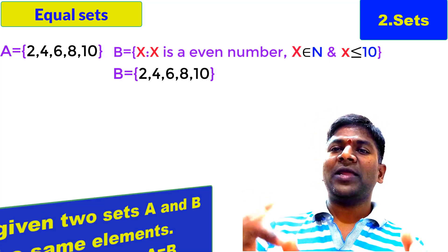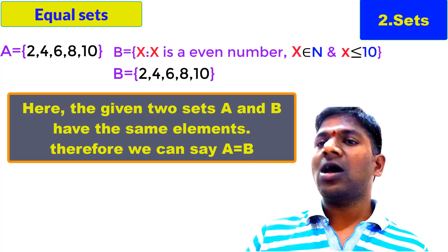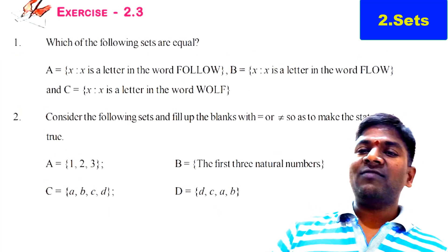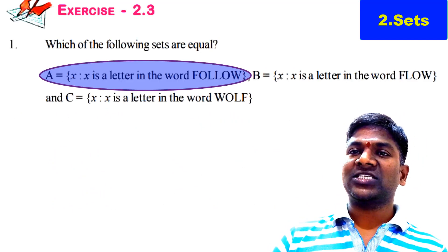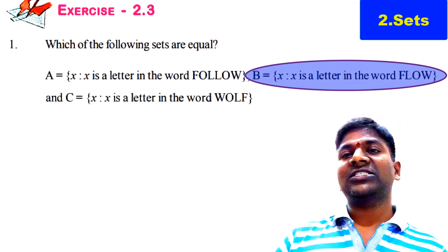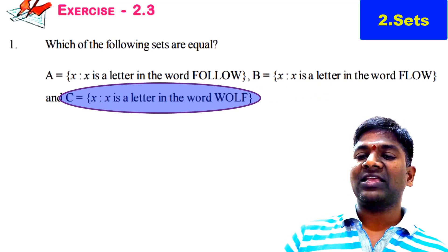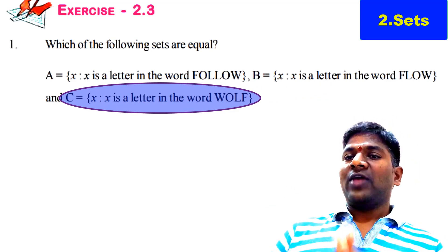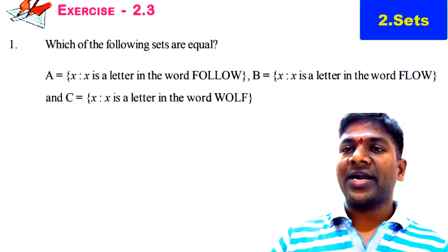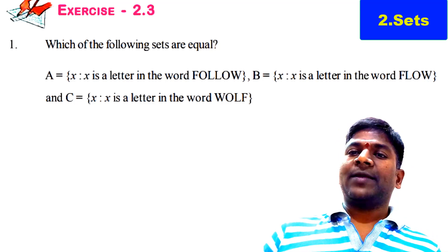Or by observation, we can simply write: all the elements of A are in B, all the elements of B are in A, so A is equal to B. Let us try to solve the question from Exercise 2.3. Which of the following sets are equal? First question: set A is given as {x such that x is a letter in the word FOLLOW}, and set B is given as {x such that x is a letter in the word FLOW}, and set C is given as {x such that x is a letter in the word WOOF}. Now we have to check whether these three sets are equal or not.